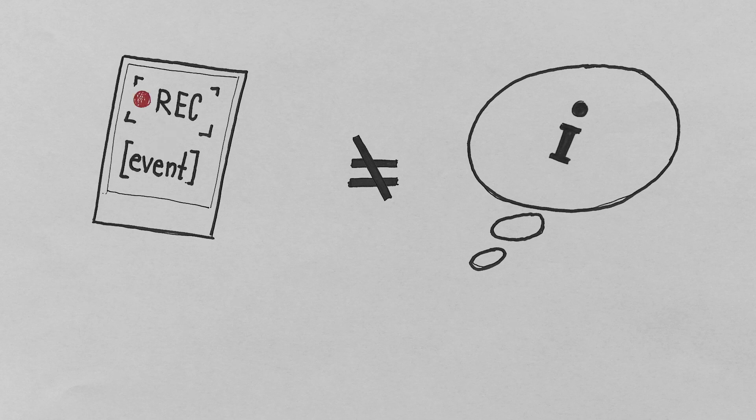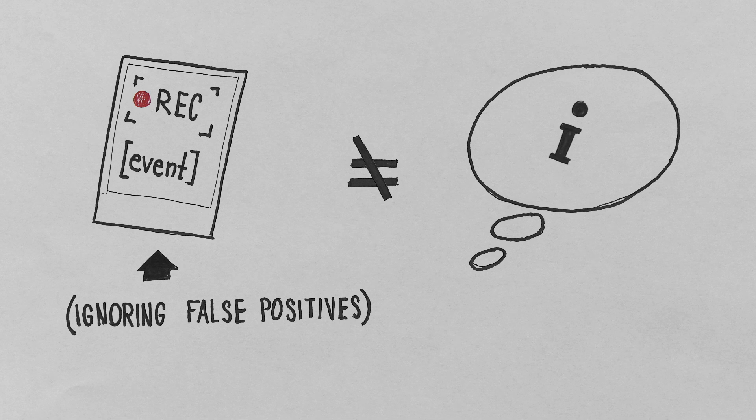A thought and a memory, however similar in the mind, are actually completely different things. A memory is a record of an event that actually happened, ignoring false positives for now. While a thought is only a thought.